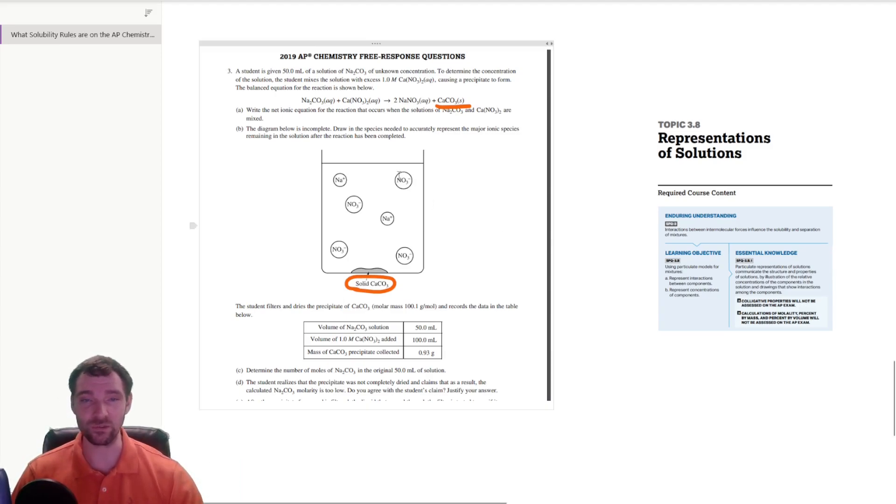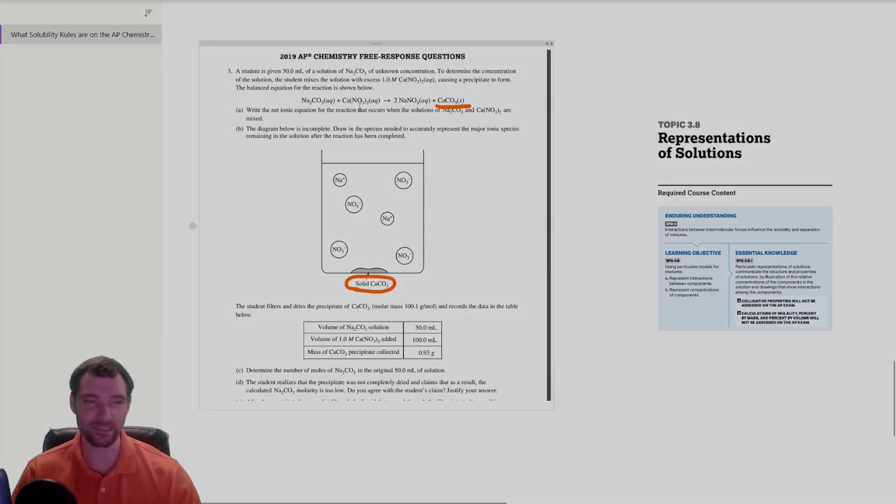That's not the focus of precipitation. It's more about how do you draw this and understand how to draw a spectator ion. When you draw a net ionic equation, how does that relate to the actual ions in solution in the drawn model? That's much bigger on the test.